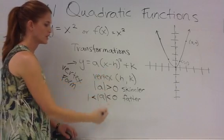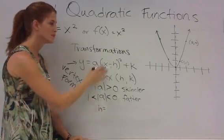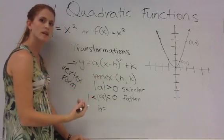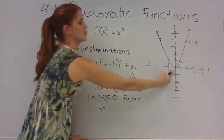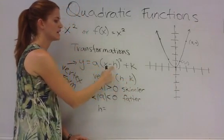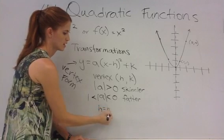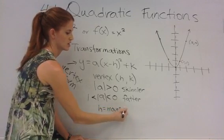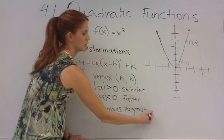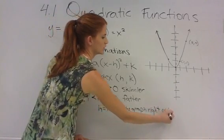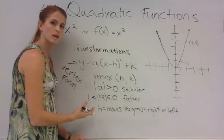This h value here moves the graph left or right, and because it's a minus h, it does it in the way that you wouldn't expect. So if this was a positive number, it's actually going to move it to the left. If this is a negative number in here, it's going to move it to the right. So h moves the graph right or left. But again, it's opposite the way you would think.